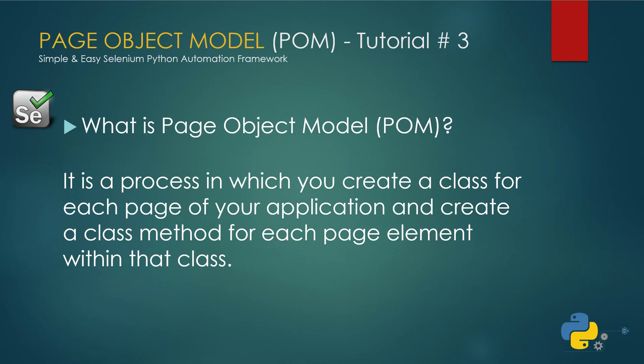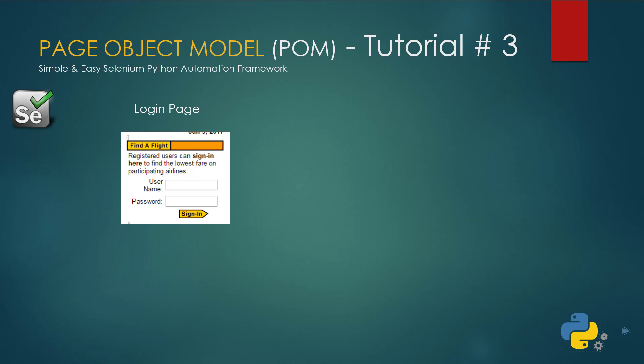So what is Page Object Model? It is a process in which you create a class for each page of your application and create a class method for each page element within that class. Let me give you an example - let's take a look at a login page. Every application has a login page and it's the most simple example. In a Page Object Model we will create a class for the login page.